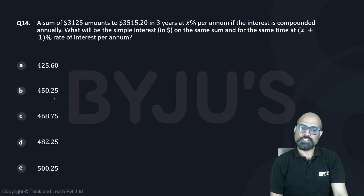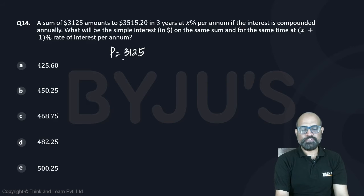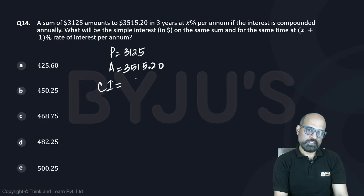Principle is given as 3125 and the amount is given as 35152.20. So we can say that the compound interest earned is going to be the difference of these two. This is going to be 390 point 20 is the interest we're going to earn.